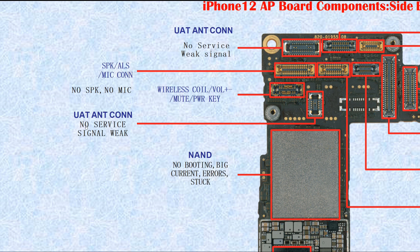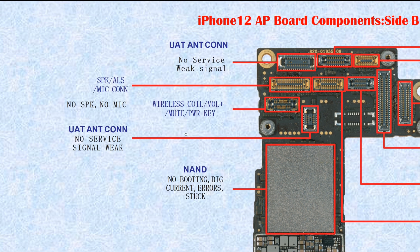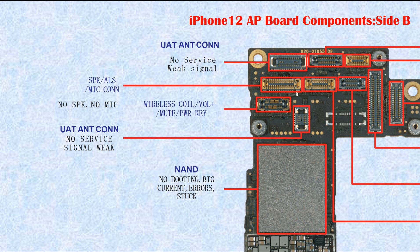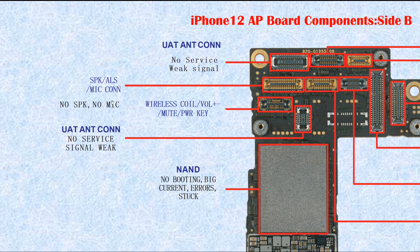This connector — if broken, it causes no service or weak signal. This connector is for the wireless charging coil, volume up, volume down, mute, and power key. If broken, it may cause no wireless charging, volume up/down fail, mute key fail, or no power. This connector is for speaker, ALS, and mic. If broken, it causes no speaker, no ALS, or no microphone. ALS means ambient light sensor.